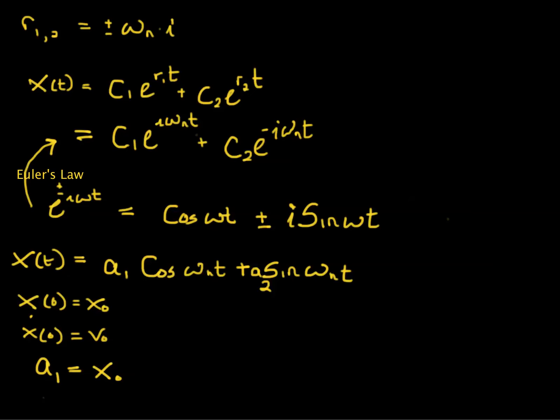Similarly, by taking the derivative, you get minus a1 times 0, because this is sine, and sine of 0 is 0, plus a2 omega n cosine of omega n t, this is 1. And that is equal to v0.